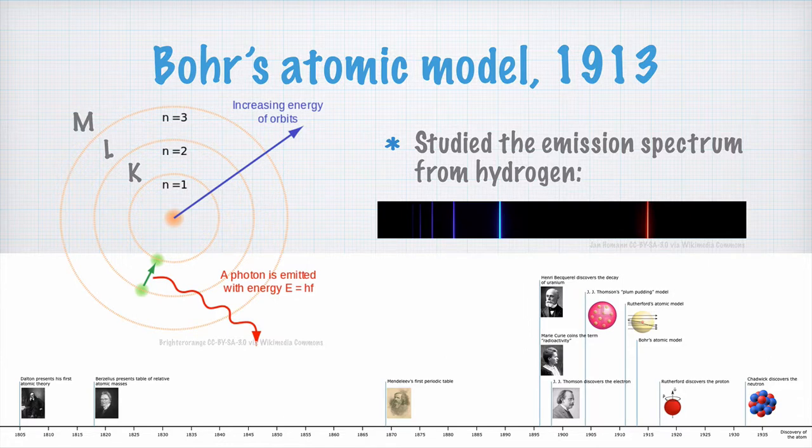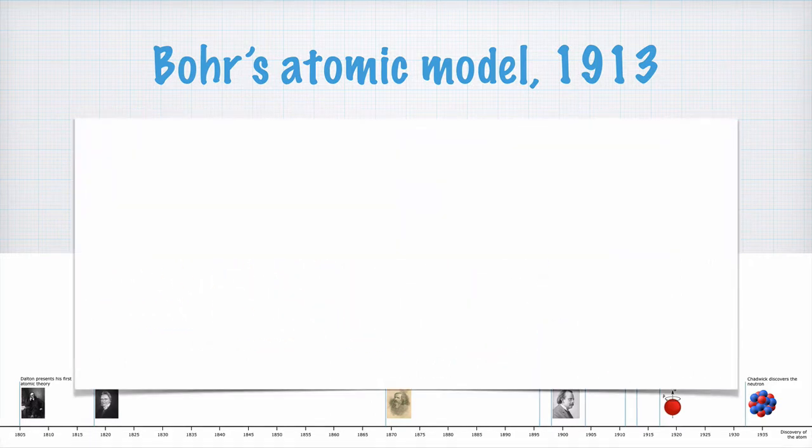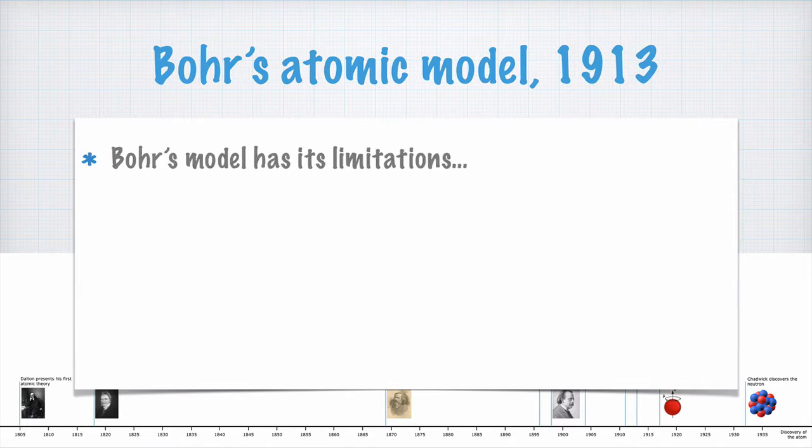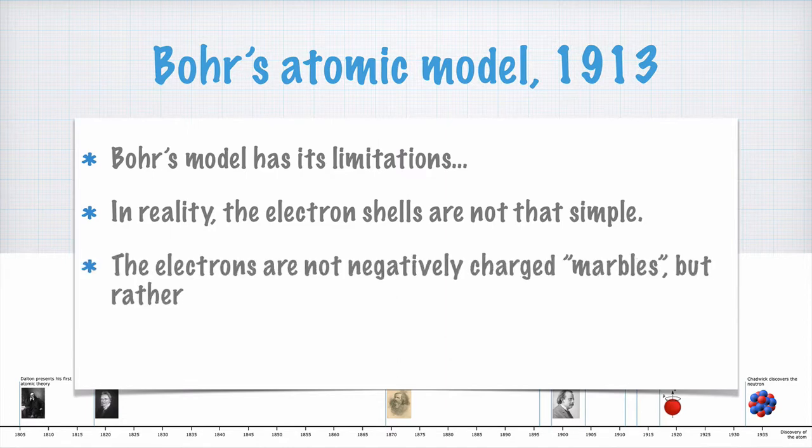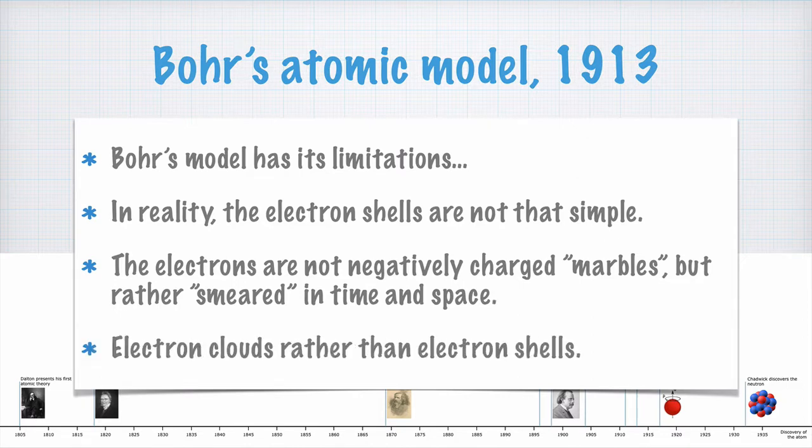Bohr's atomic model is really good, and you can use it to describe the hydrogen atom very well. But, it has its limitations. The electron shells are not as simple as first thought. That is, the orbits around the nucleus aren't all circular. And, the electrons aren't simply little marbles with negative charge, but rather smeared in time and space, so that you can only tell with some probability where an electron is, and where it's going. Because of this, we actually rather say that the electrons are in an electron cloud than an electron shell.